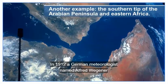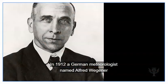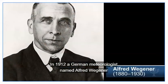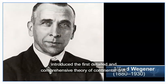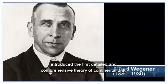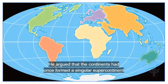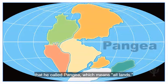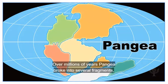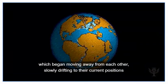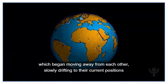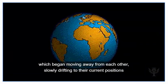In 1912, a German meteorologist named Alfred Wegener introduced the first detailed and comprehensive theory of continental drift. He argued that the continents had once formed a singular supercontinent that he called Pangaea, which means 'all lands.' Over millions of years, Pangaea broke into several fragments which began moving away from each other, slowly drifting to their current positions on Earth's surface.